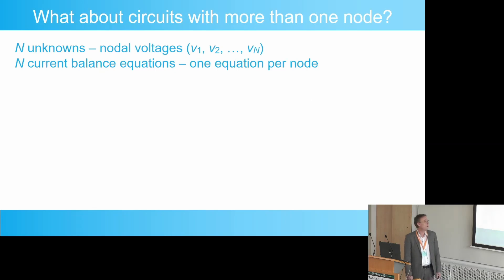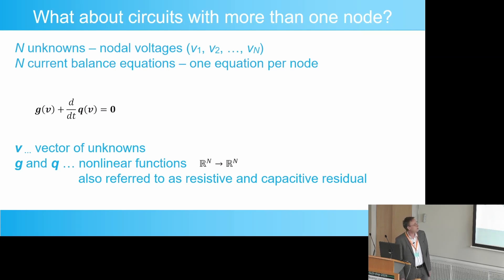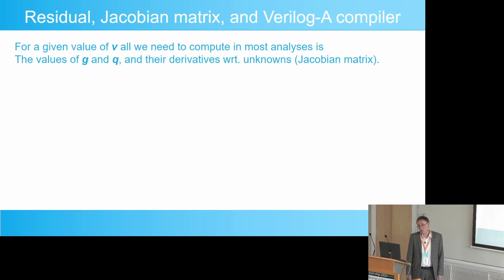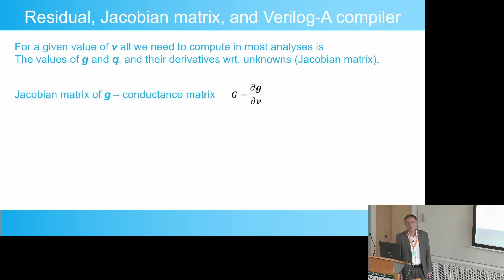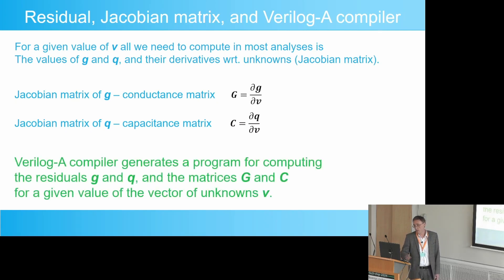What happens if we have multiple nodes? Everything stays the same, except that we get N equations and N unknowns. Our two functions G and Q are now vector-valued functions — maps from N real numbers into N real numbers. We also refer to these two functions as the resistive and the capacitive residual. Simulators require a little bit more than just the residual to solve the circuit — they also require the derivatives of the residual with respect to all unknowns, and these derivatives are gathered in the Jacobian matrices.